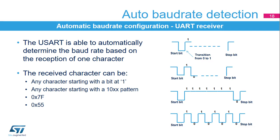The USART receiver is able to detect and automatically configure the baud rate based on the reception of one character. The received character can be any character starting with a bit at 1 — in this case the USART measures the duration of the start bit from falling edge to rising edge — or any character starting with a 1-0-X-X pattern, where the USART measures the duration of the start and first data bit from falling edge to falling edge for better accuracy. For a 0x7F character frame, the baud rate is updated first at the end of the start bit, then at the end of bit 6. For a 0x55 character frame, the baud rate is updated at the end of the start bit, then at the end of bit 0, and finally at the end of bit 6. In parallel, another check is performed for each intermediate transition of the RX line.